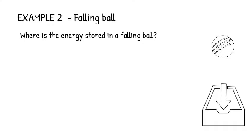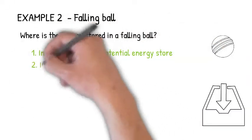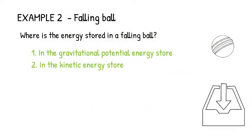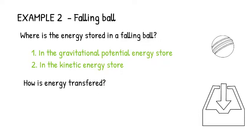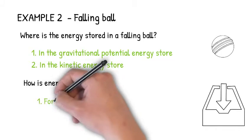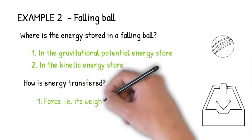It is stored in the gravitational potential energy store when it is above the ground and it is transferred to the kinetic energy store as it starts moving. So how do you think energy is transferred from the gravitational potential energy store to the kinetic energy store? It is transferred by force and in this case, the ball's weight.